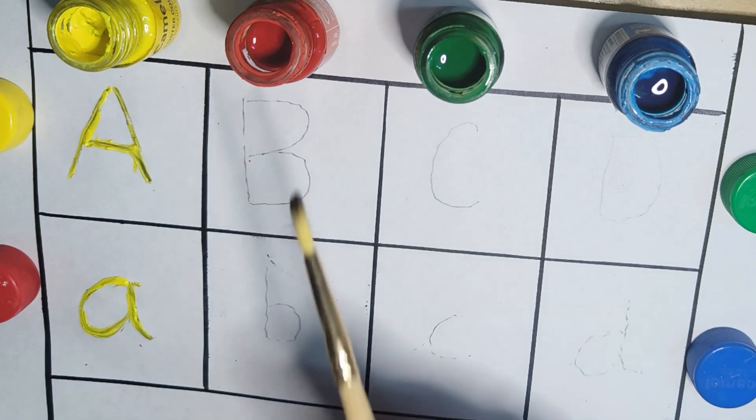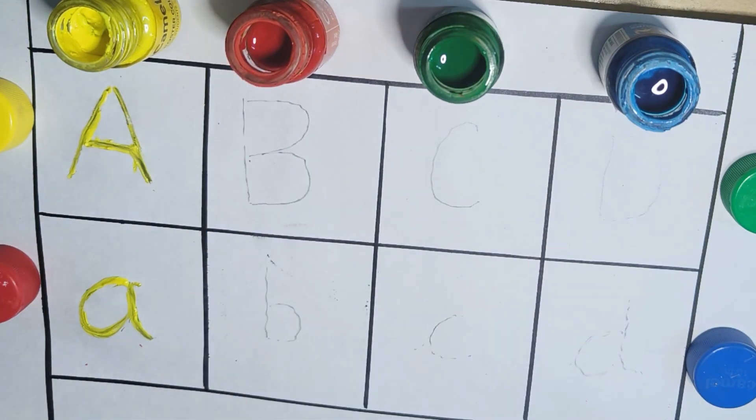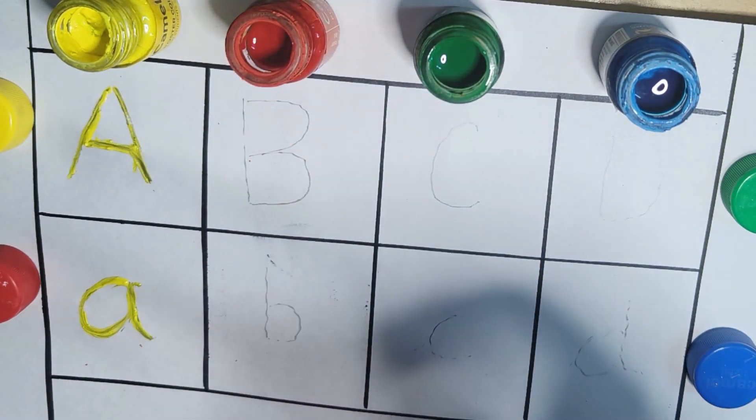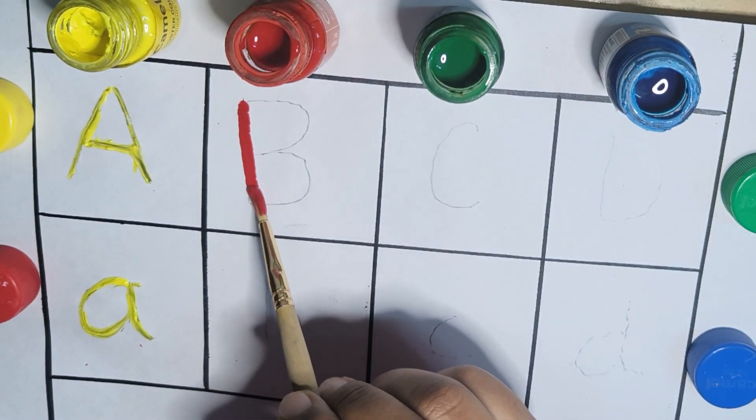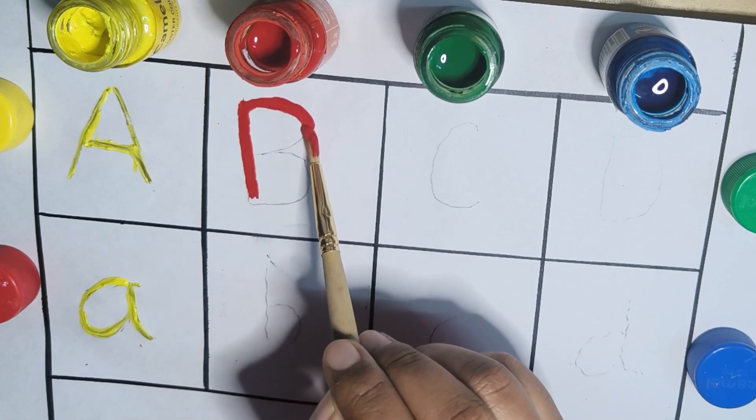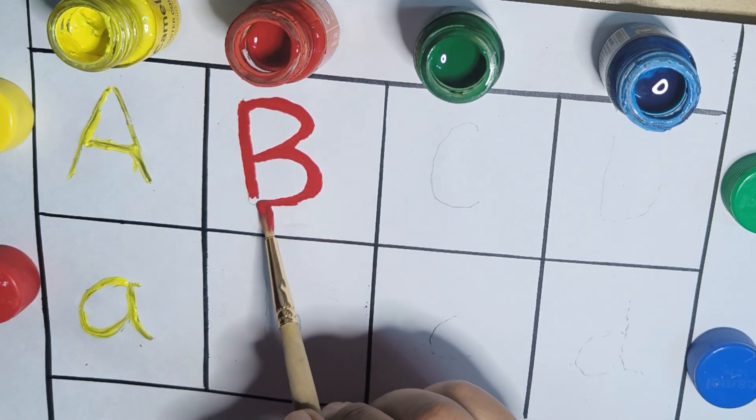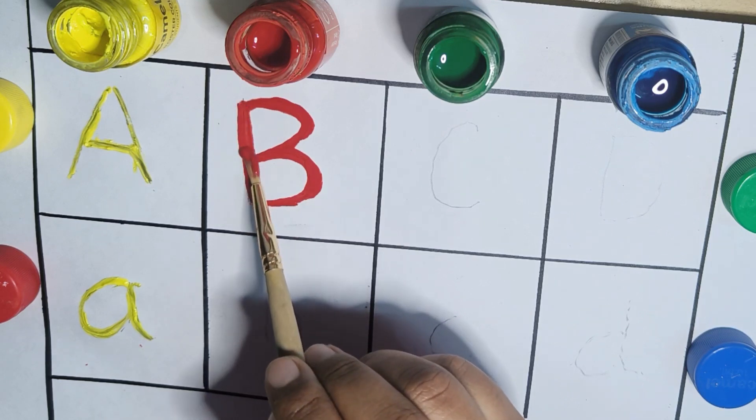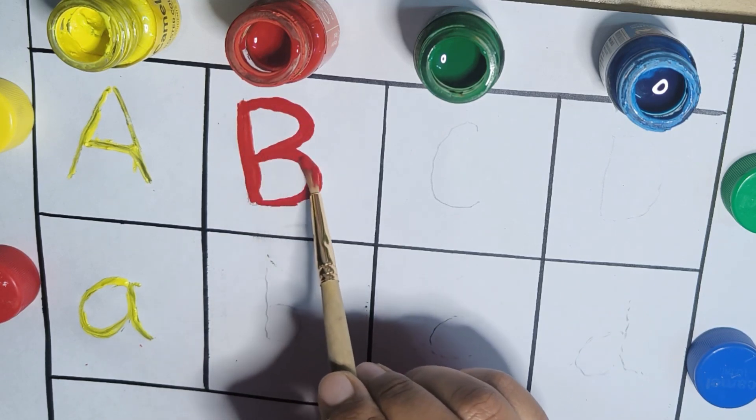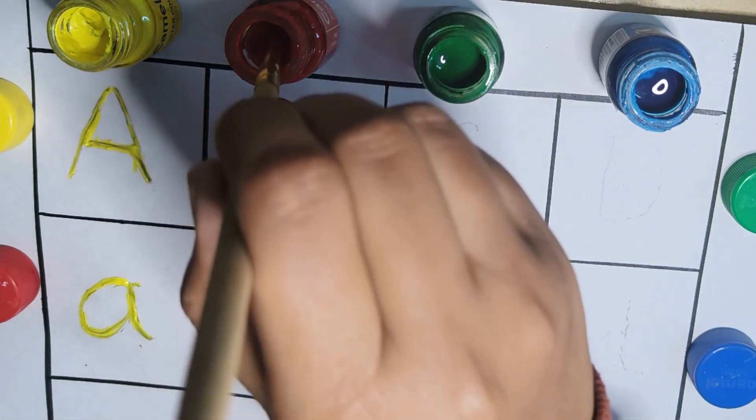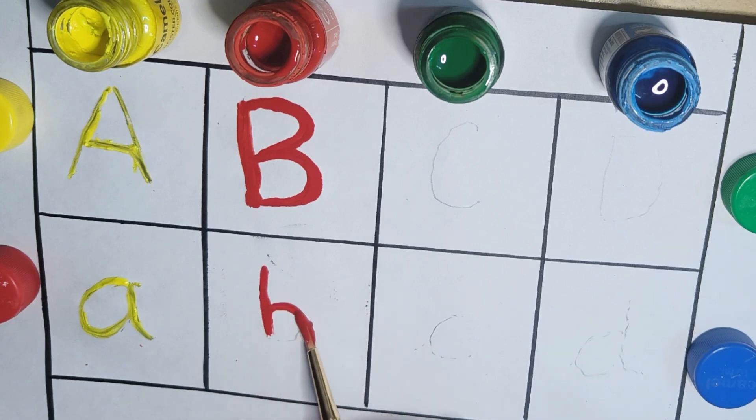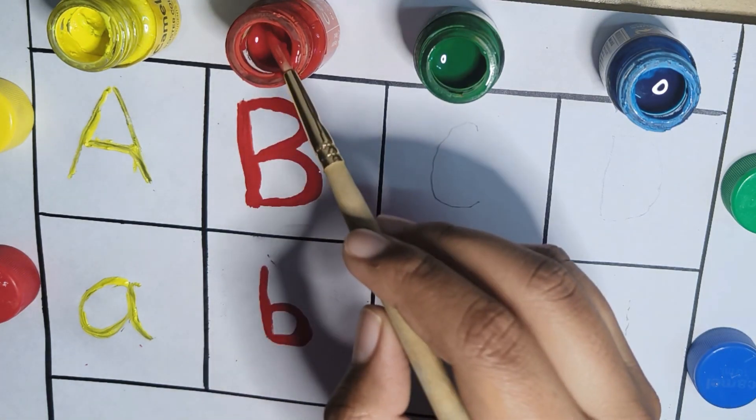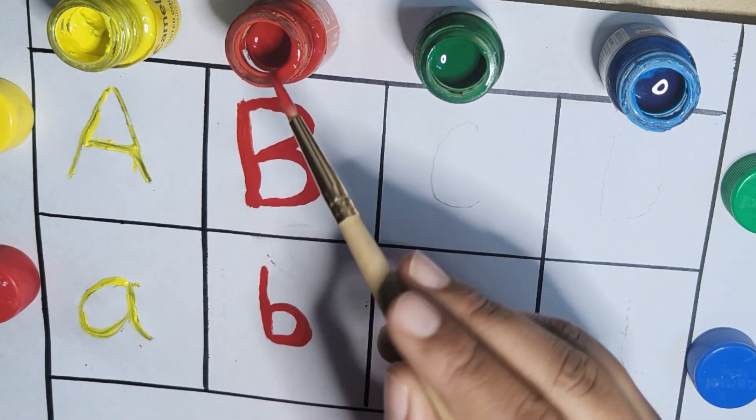Next is red color. This is red color. Let's make B. So here I am making B. B for ball. This is small b. B for bat.